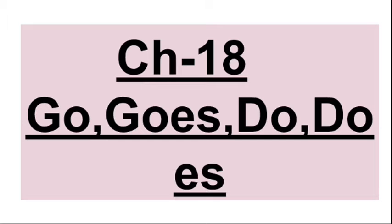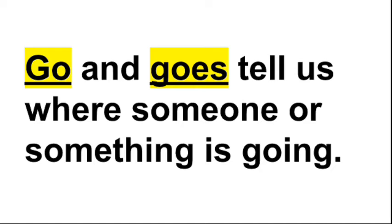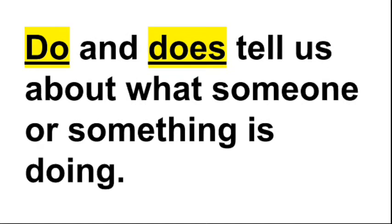Go and goes tell us where someone or something is going. If we want to know where someone or something is going, we use go and goes. Do and does tell us about what someone or something is doing.